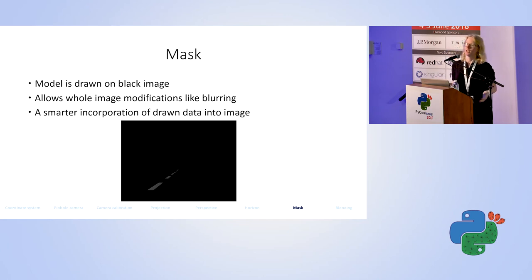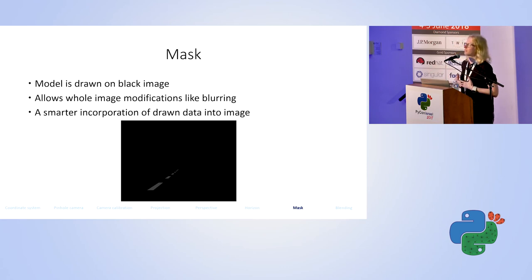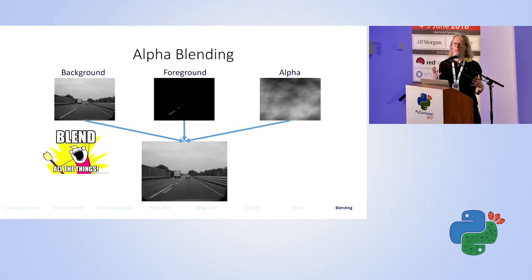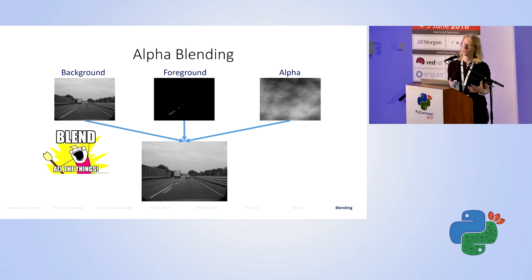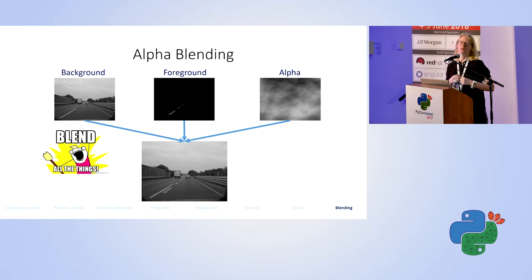We want our networks to recognize the data we drew. So instead of drawing directly on an image, we draw on a mask. After drawing, we can apply whole-image transformations such as blurring on this mask. In the end, we do blending: we take the mask we drew on and the background image — the original image — and we want it to remain as close as possible to the original. We take the mask, the background image, and an alpha channel of random noise we created, and blend them together to produce an image with the new road markings.